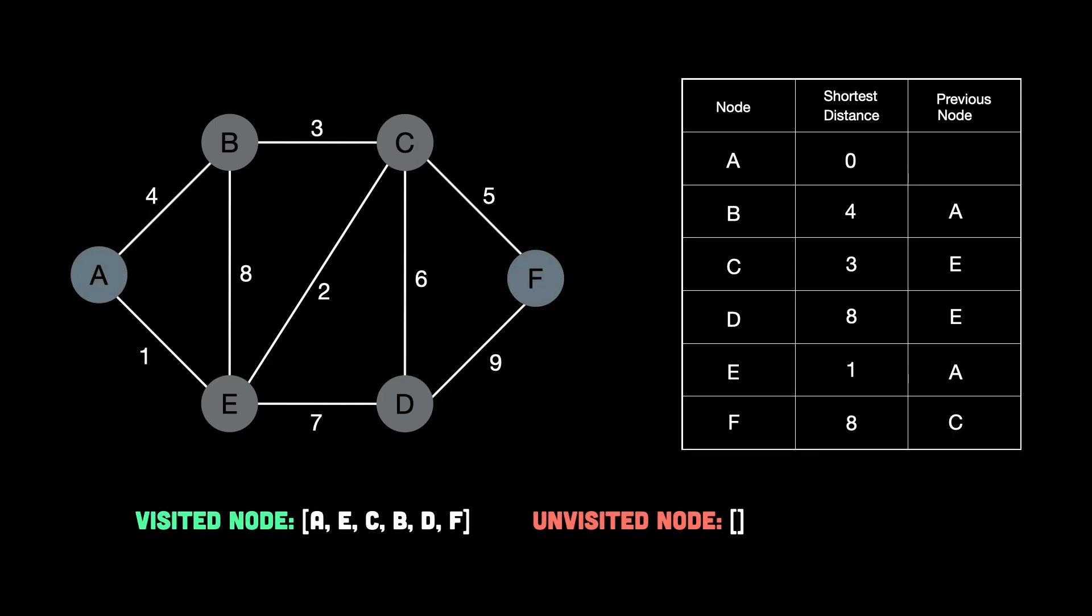Now to check the final result, we reconstruct the shortest path. To reconstruct it, we backtrack using the previous node pointers we noted earlier. Starting from F. So basically, F came from C, C came from E, and E came from A. So the final path in reverse is F, C, E, A. And if you check from A, then the final path is A, E, C, F. And the total cost is 1, which is A to E, plus 2, which is E to C, plus 5, which is C to F, and that gives us a total of 8. And that's our shortest route.